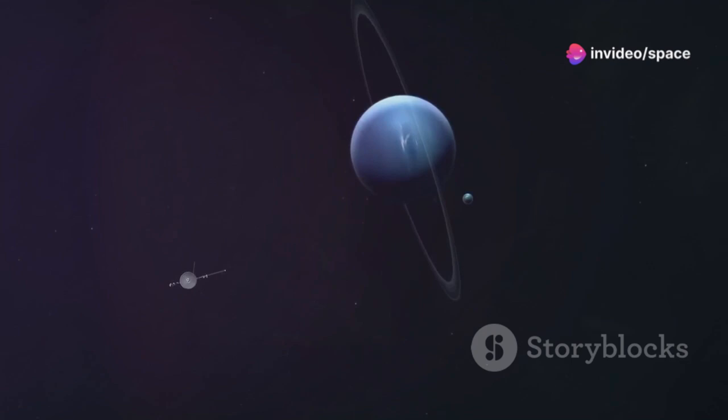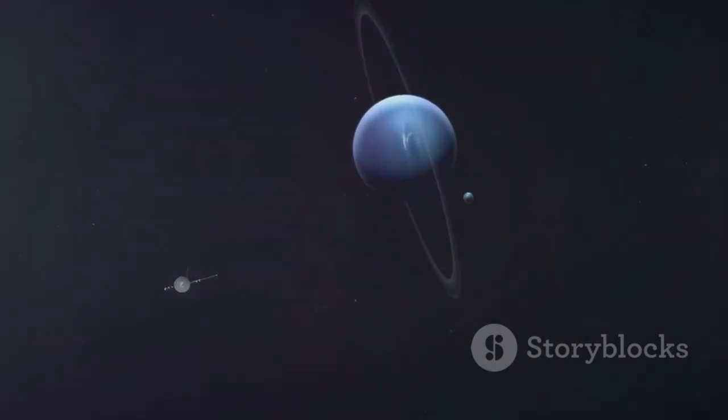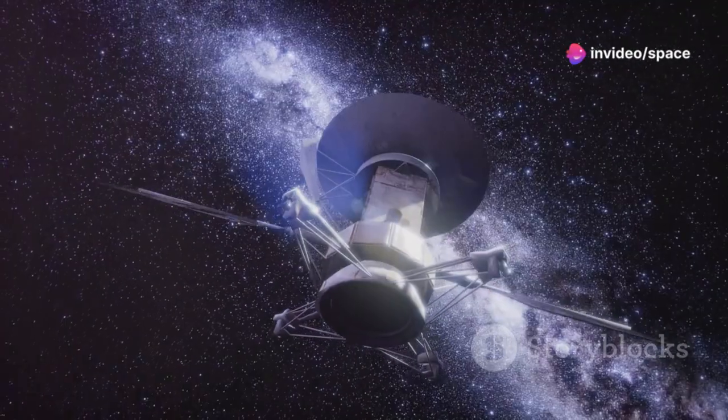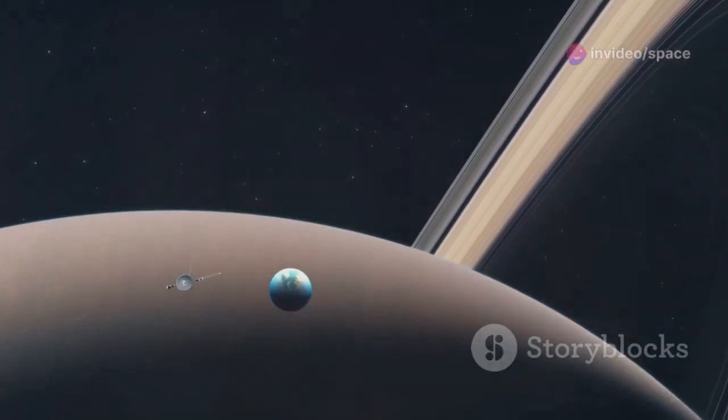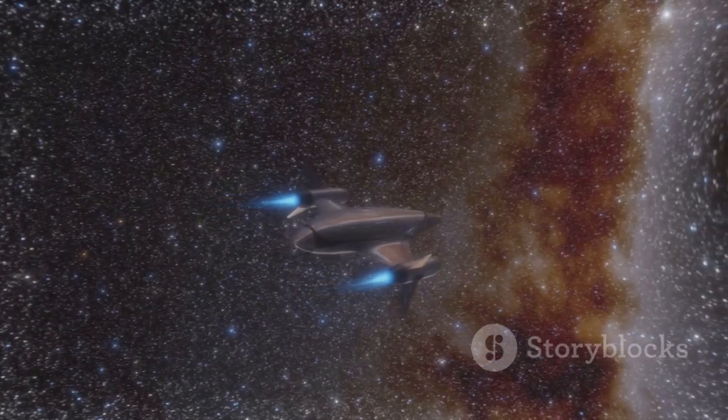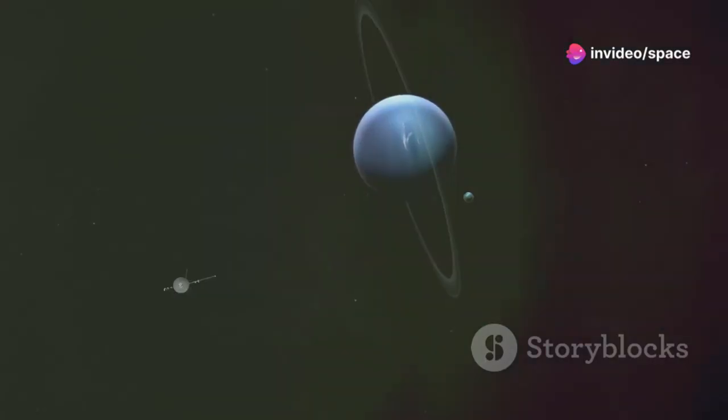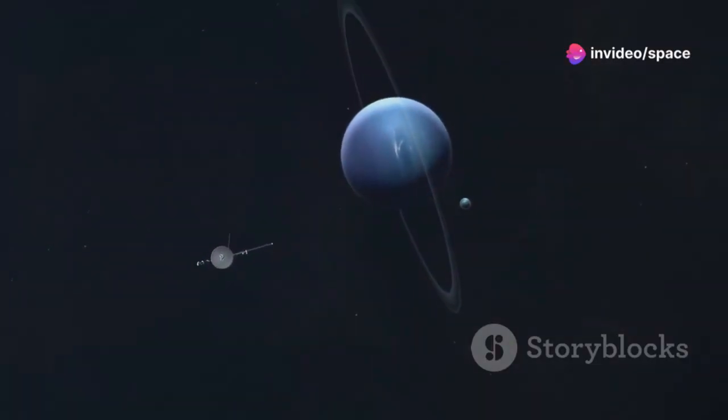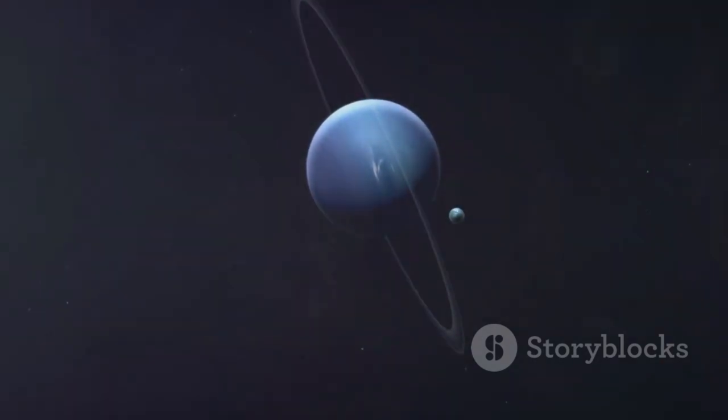The Voyager probes were launched on trajectories that took advantage of a rare planetary alignment, a celestial choreography that occurs only once every 176 years. This alignment allowed the spacecraft to utilize a gravity assist technique, using the gravitational pull of each planet to slingshot themselves onward to the next. Voyager 2 launched first on August 20, 1977, followed by Voyager 1 on September 5.